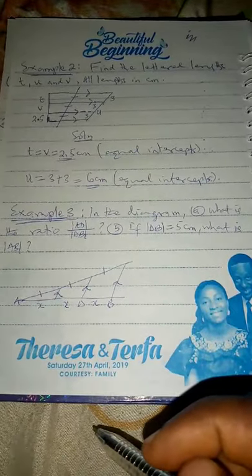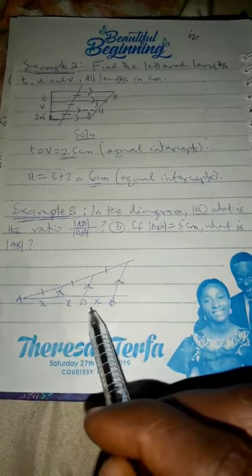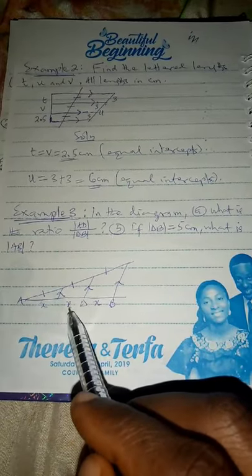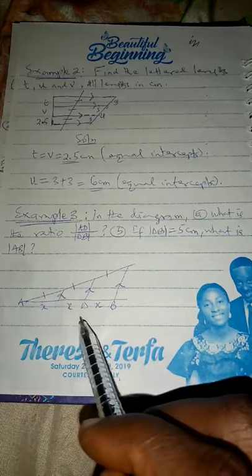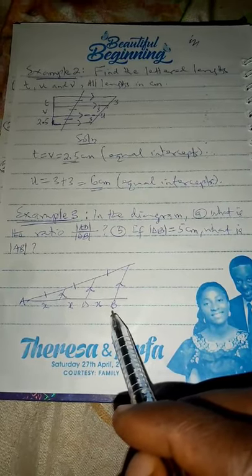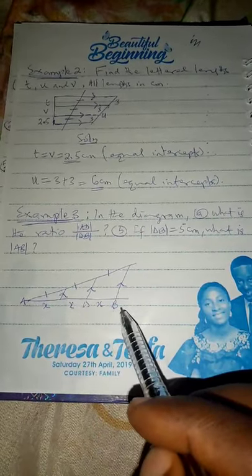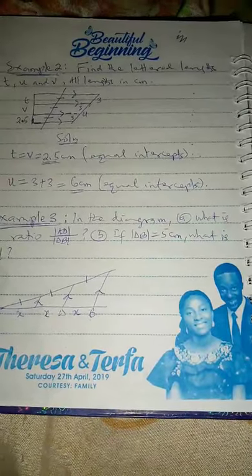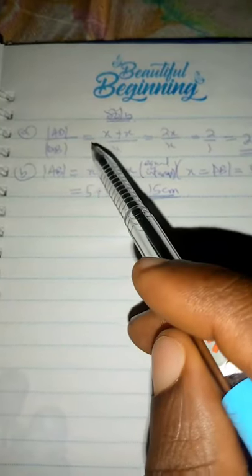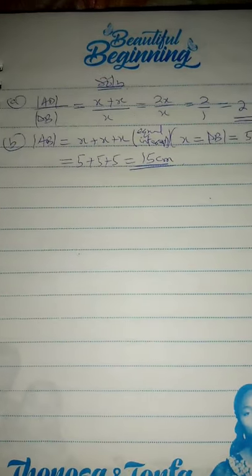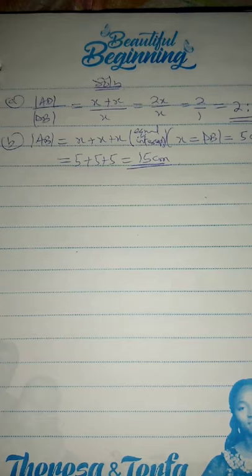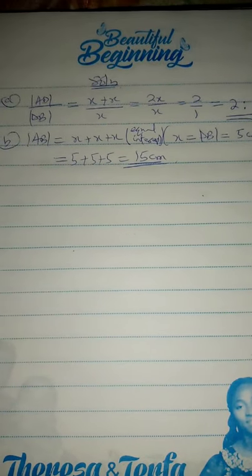Having done that, AD will be X plus X. DB will be X. AD is X plus X, and DB is just X. Therefore, the ratio AD over DB will be X plus X over X, which is 2X over X. X cancels X to give you 2 over 1. So, that ratio is 2 : 1.